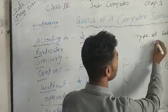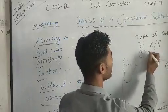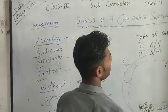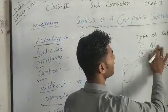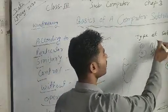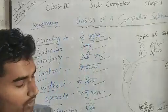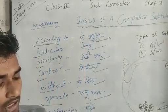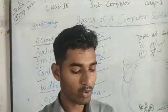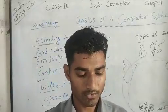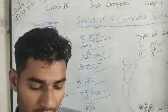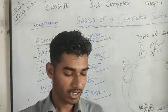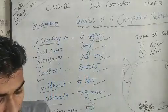Software is categorized into two parts: application software and system software. A code or software designed to perform a particular type of work is called application software.